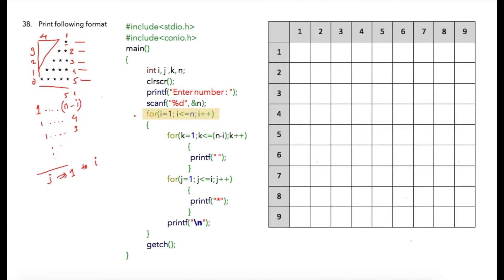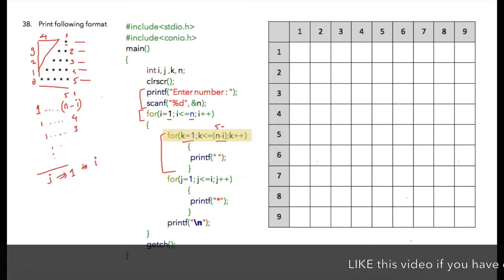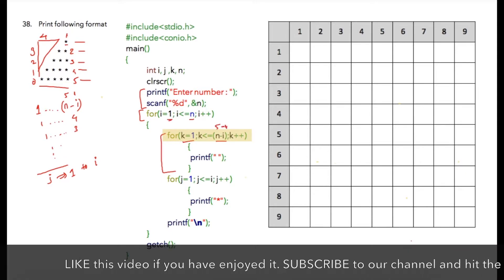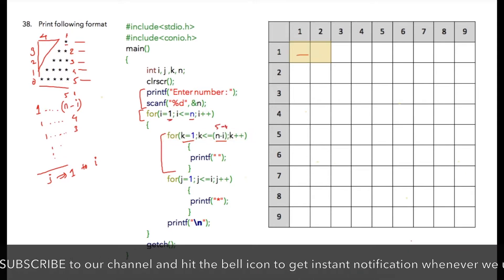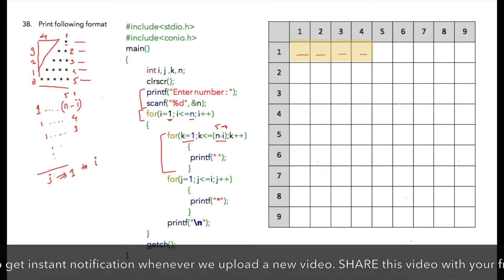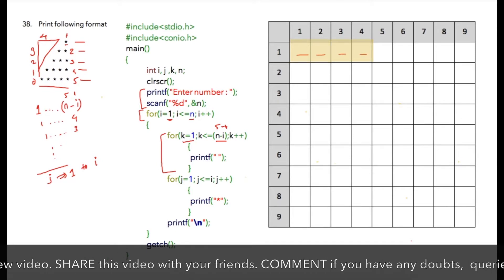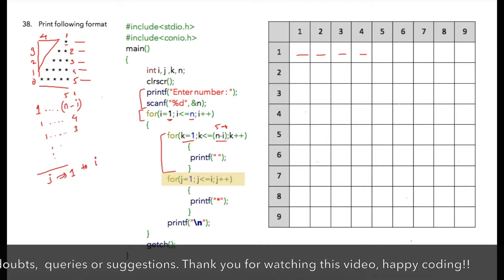The outer loop is for all rows — the user enters n, and this loop runs from 1 to n. The inner for loop prints spaces using a new variable k, starting from 1 till n minus i. In the first iteration n is 5 minus i which is 1, so 1 to 4 — 4 spaces will be printed in the first iteration of i, then the for loop will be terminated.